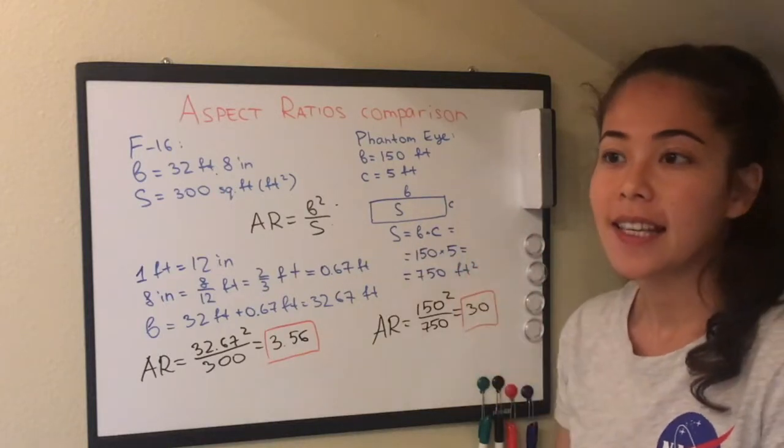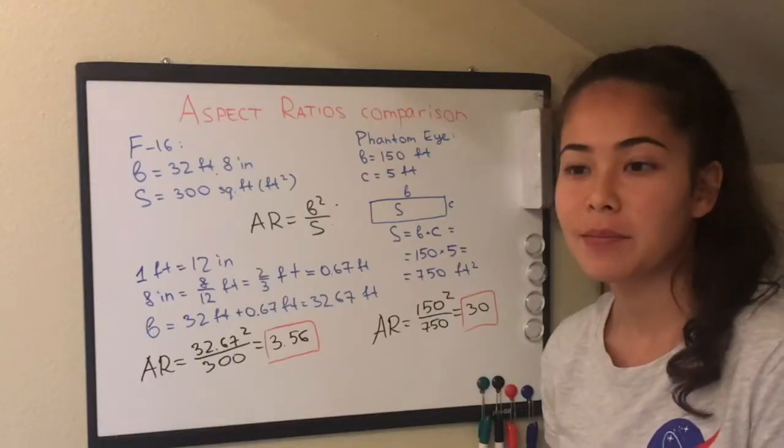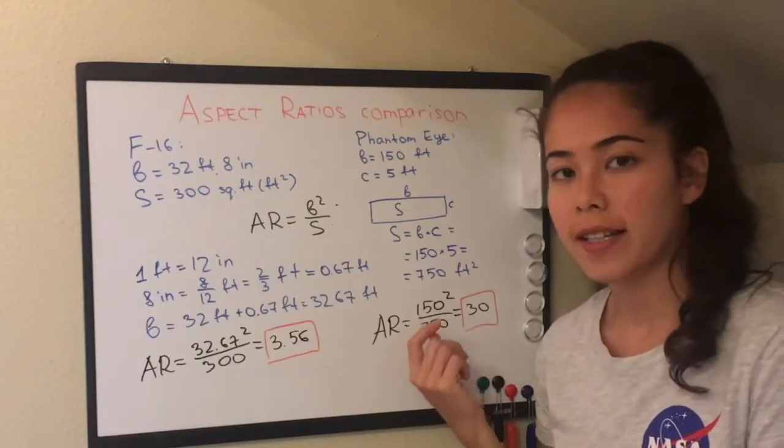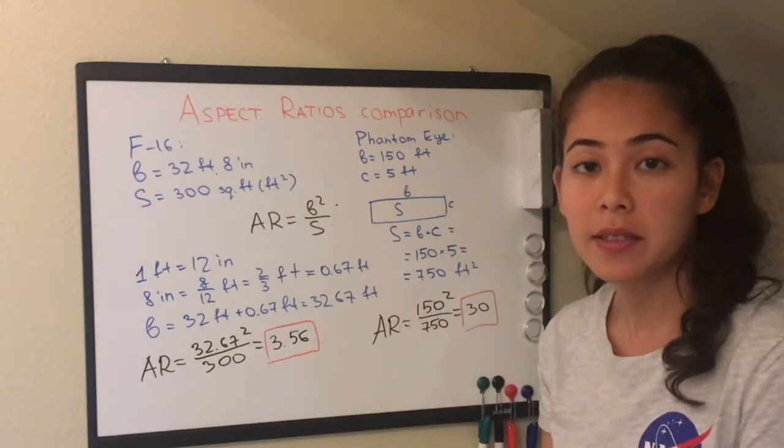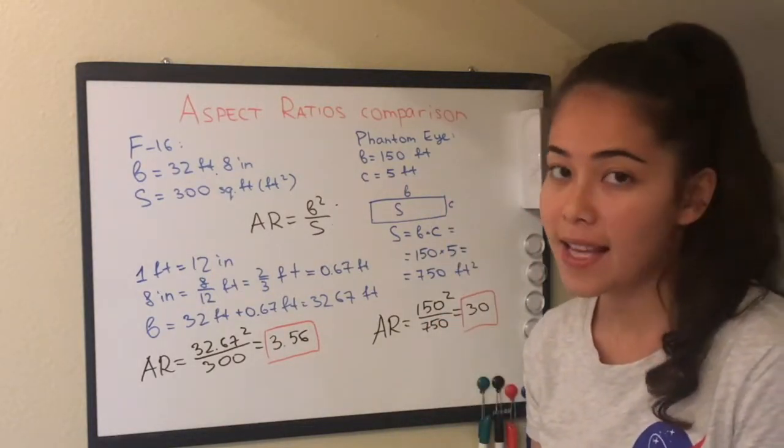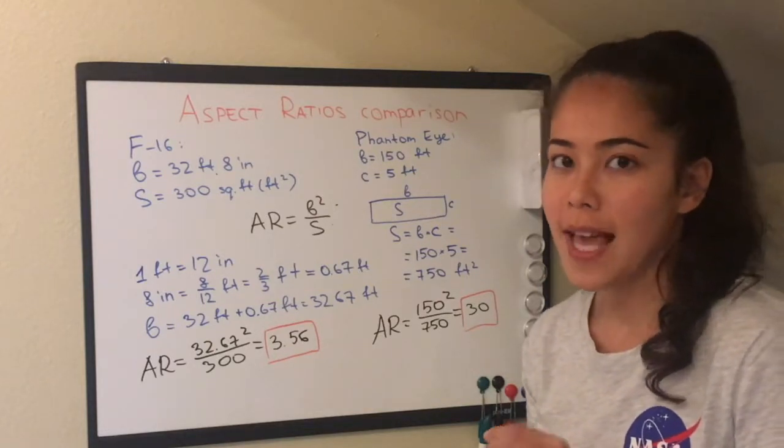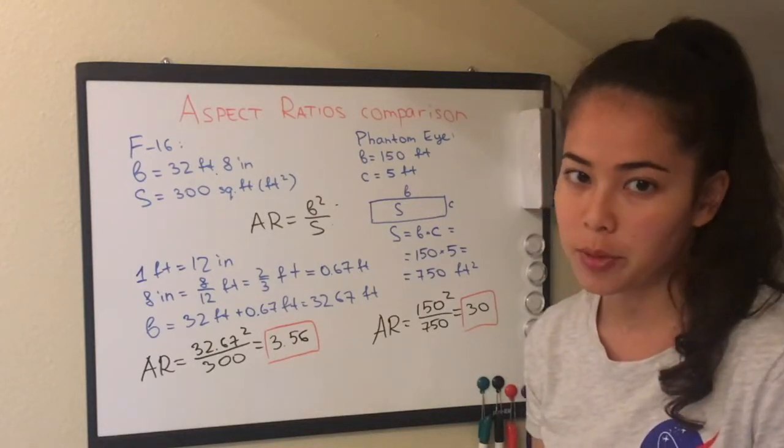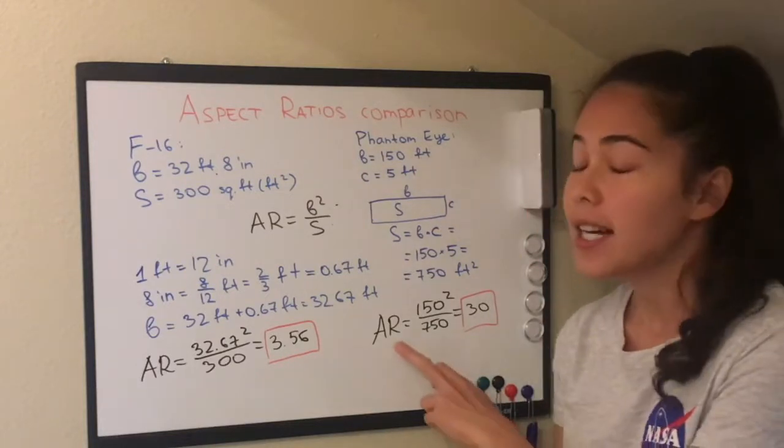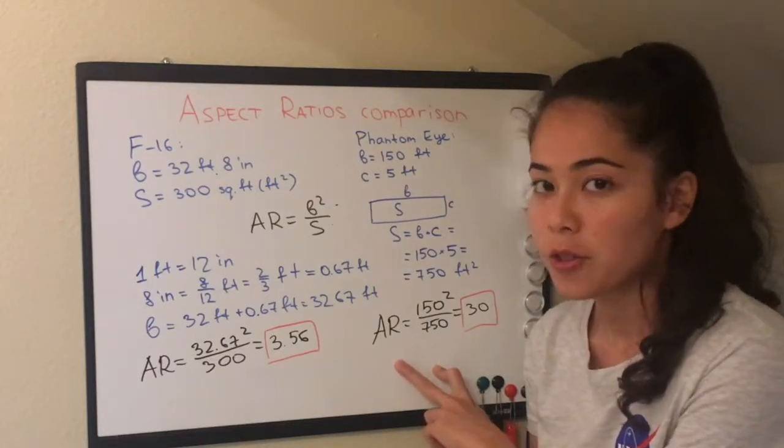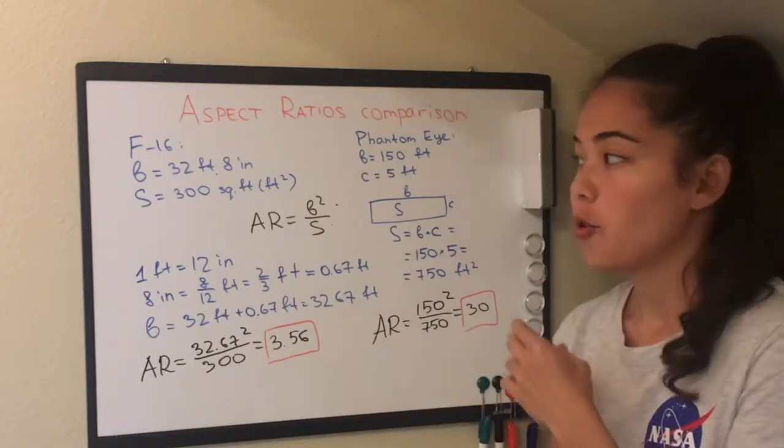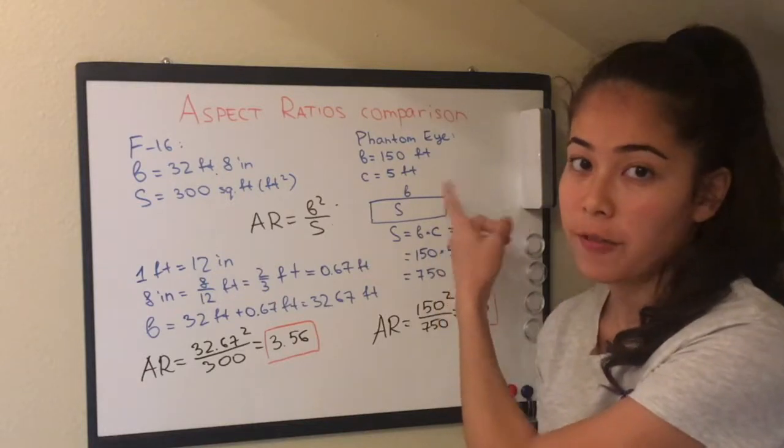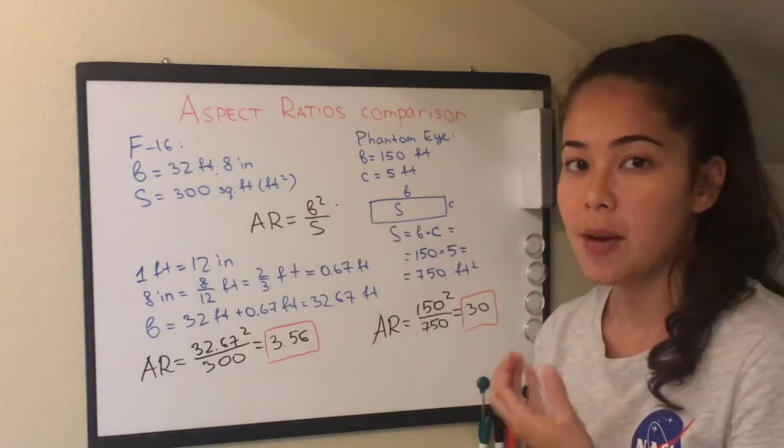And Boeing Phantom Eye is a reconnaissance drone, which basically means looking over one area over a long period of time. So for this aircraft we need an ability to stay up in the air for as long as possible, which means we need to be as fuel efficient as possible. And how do we achieve that? By having a high aspect ratio, which means we will have a high lift to drag ratio. So this aircraft doesn't spend as much fuel to be able to stay up in the air.